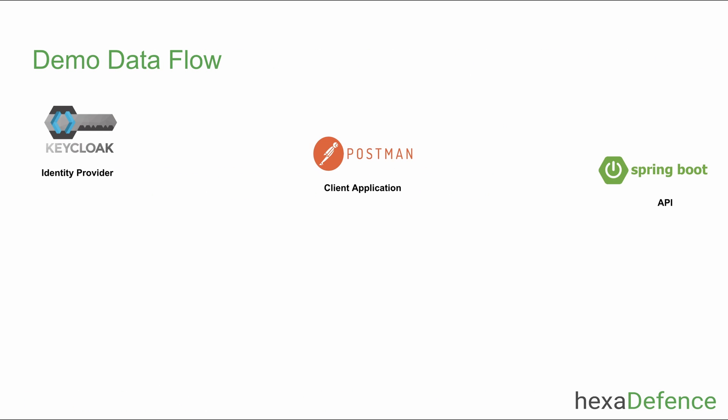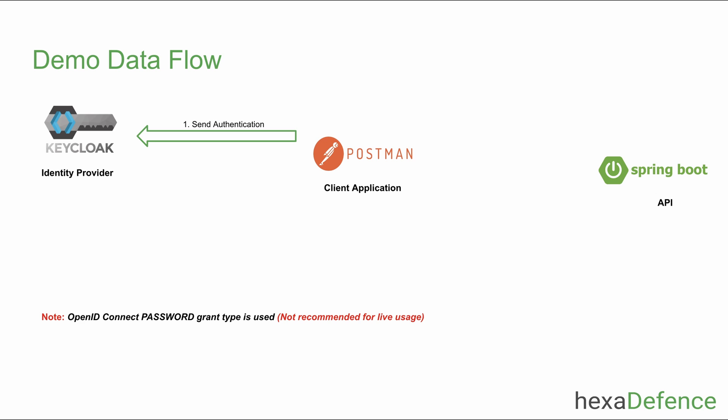In the demonstration I used Keycloak as the identity provider, Postman as the client application, and a Spring Boot app as the backend API. Since this is a demonstration I used the OpenID Connect password grant type. As the first step, the Postman client sends a request to the identity provider and gets an access token. After that, Postman sends an HTTP request to the Spring Boot backend API including the token. Spring Boot validates the token and if it is valid, sends a response.